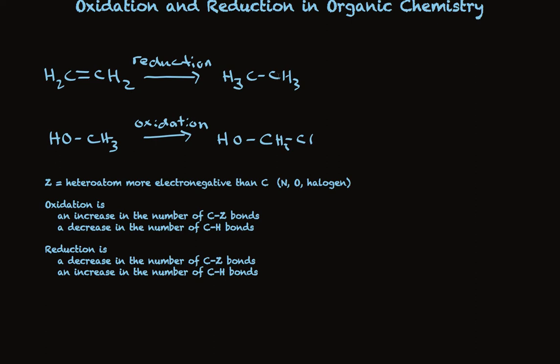In the second example, there is 1 C-Z bond and 3 C-H bonds. In the product, we have 2 C-Z bonds, and we've decreased the number of C-H bonds. So this clearly is an oxidation. We can apply this to lots of examples, and I encourage you to do some practice on this so things make sense to you.